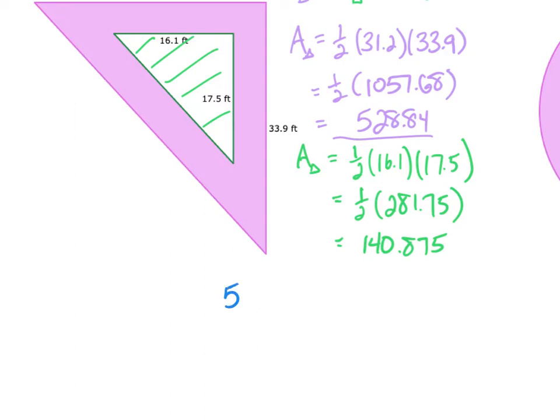So my answer is I need to subtract these two. So I take 528.84, subtract 140.875, and I get 387.965, which I'm going to round to the nearest ones. But this is going to round to 388 feet squared. All right, let's do the next one.